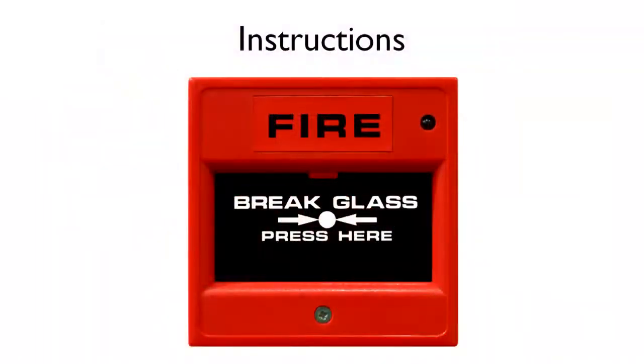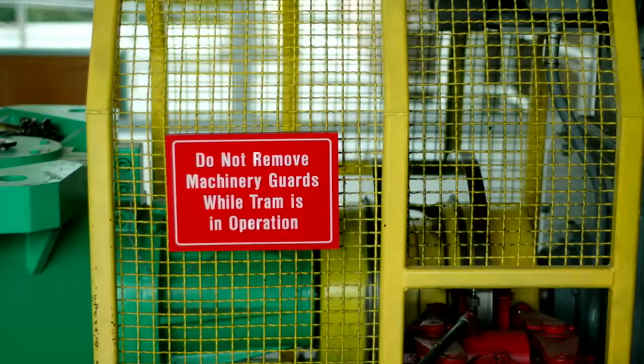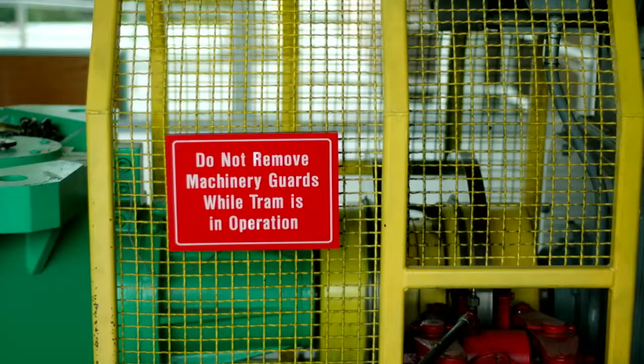And while not necessarily examples of standardization, the following examples demonstrate how visual controls are actually all around us. For example, this visual control provides instructions such as what to do in case of a fire, while this one tells us what not to do when dangerous equipment is operating.